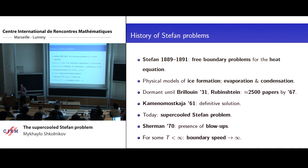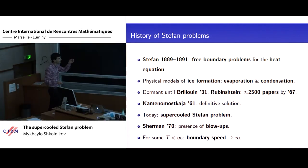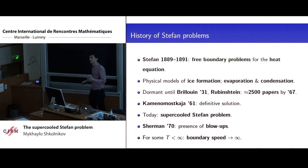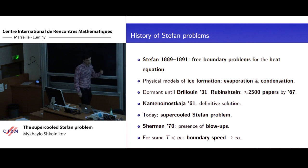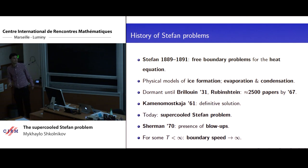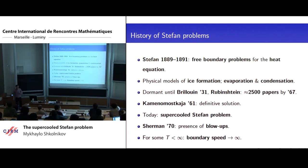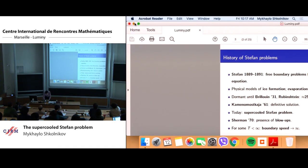What I will talk about today is a different regime of the Stefan problem, namely the so-called supercooled regime. This means that the liquids in my talk will be supercooled: you take a liquid, for example water, and cool it below its freezing temperature — below zero Celsius for water — but in such a way that your liquid still remains liquid, staying in this metastable liquid state even though the temperature is below the freezing point. The behavior of these supercooled liquids is very different from regular liquids, and rather than telling you in words, I'll show you a quick video.